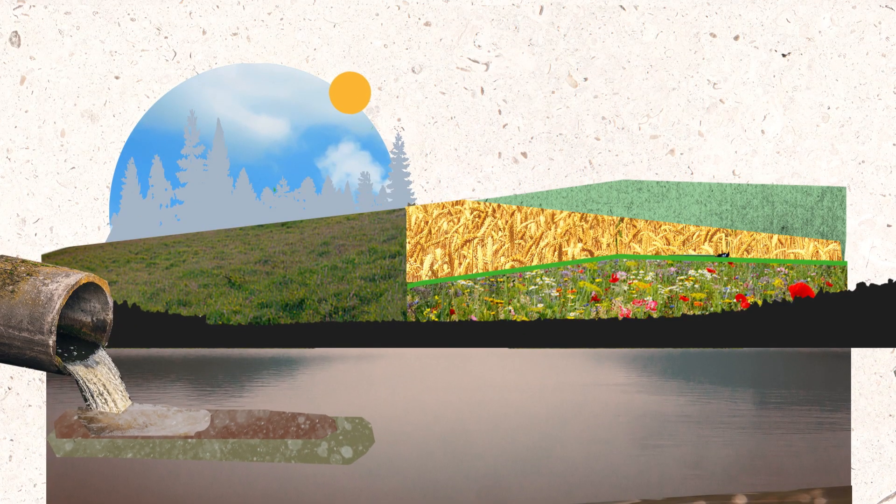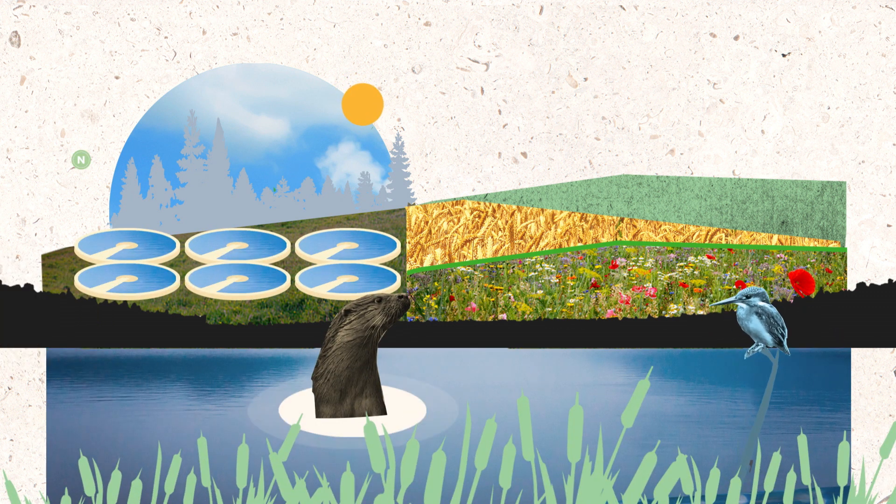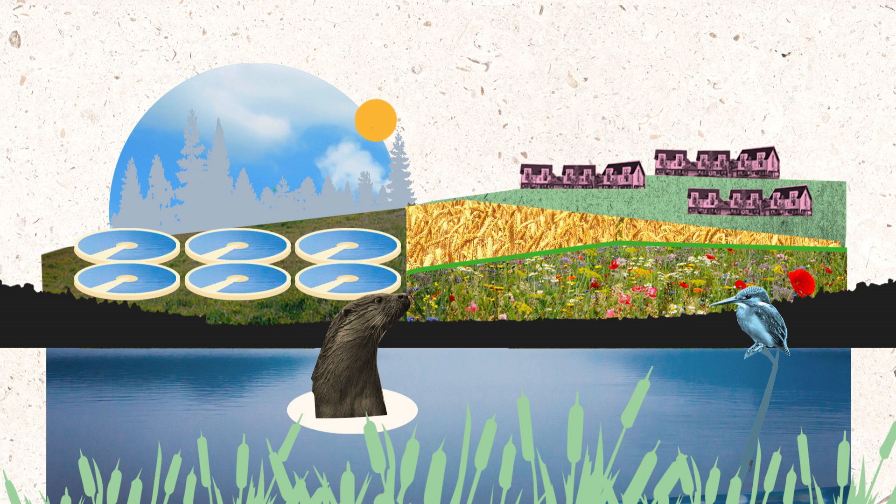By managing land sustainably, improving wastewater treatment infrastructure or creating wetlands, you can generate nitrate and phosphate credits. Those credits can then be sold to developers.